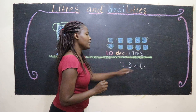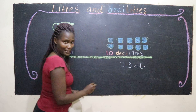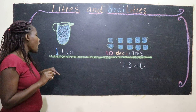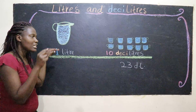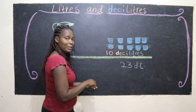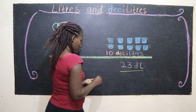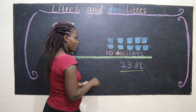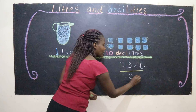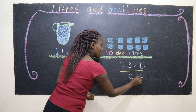So let's see how we can apply this in the classroom. When you're given, for example, 23 deciliters — I'll write 'dL' for deciliters — and you're supposed to find how many liters are hiding inside.